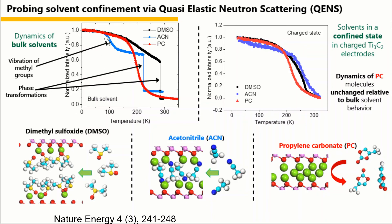For propylene carbonate, there is almost no change between the bulk electrolyte and in the electrode. If PC were confined in the MXene, the small interlayer space would lead to the largest confinement effect. But based on the mean square displacement, the confinement of PC is much lower than that of acetonitrile in MXene, further suggesting the absence of PC between the layers. This study demonstrates that new electrochemical material systems require different approaches to find matching electrolytes for high performance. We cannot just consider ion-electrode, ion-solvent, or solvent-electrode interactions in isolation — there is an interplay between all active components that requires investigation.